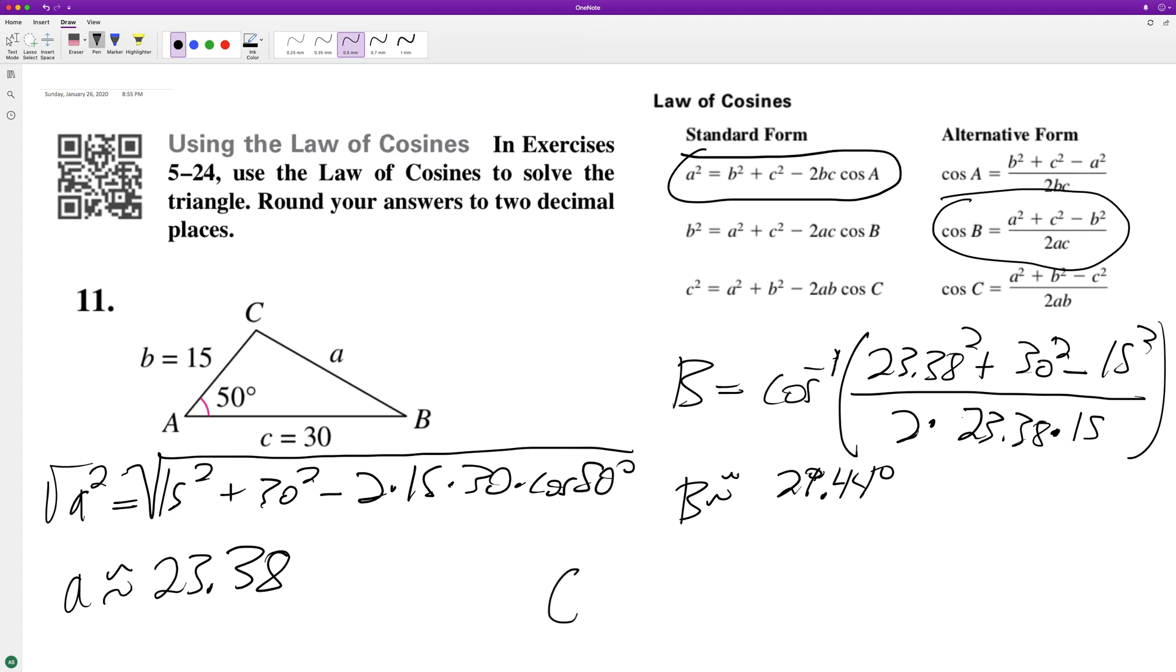All we need to do for C is take 180 minus 29.44 minus 50 degrees, and we end up with 100.56 degrees.